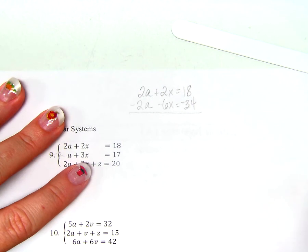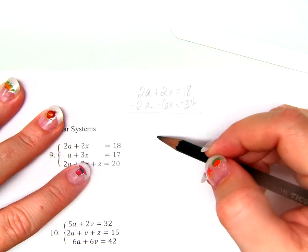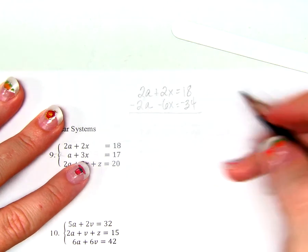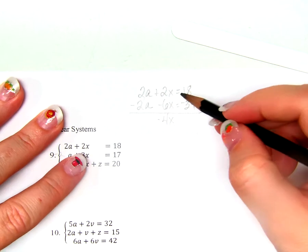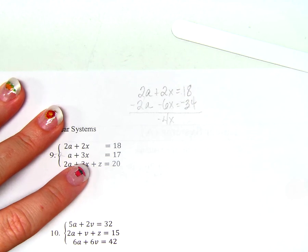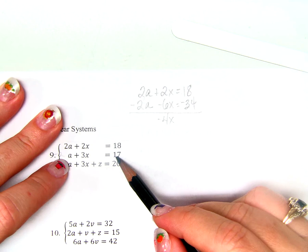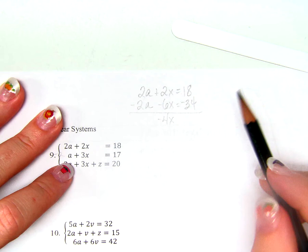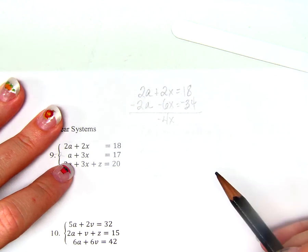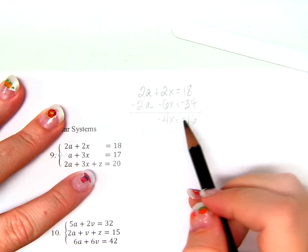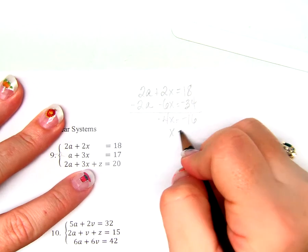Combine them to eliminate a variable. 2A and negative 2A? Zero. 2X and negative 6X? Negative 4X. 18 and negative 34? Negative 16. So if negative 4X equals negative 16, what does X equal? X equals 4.